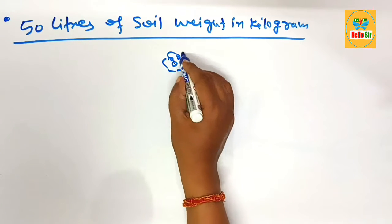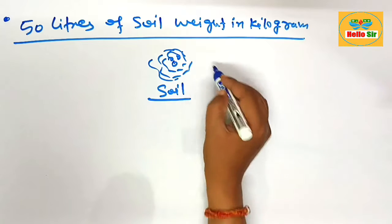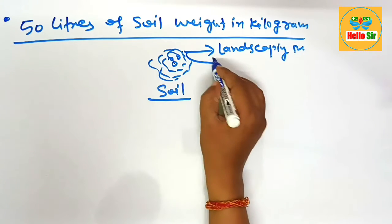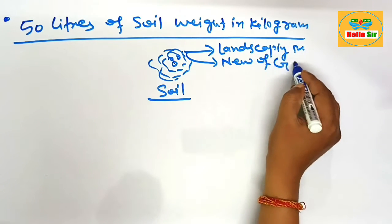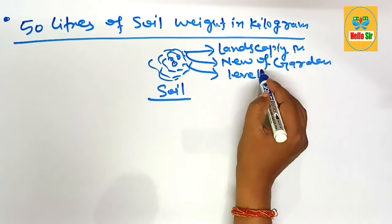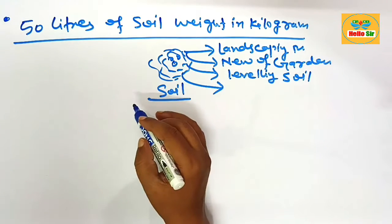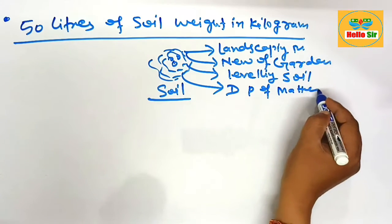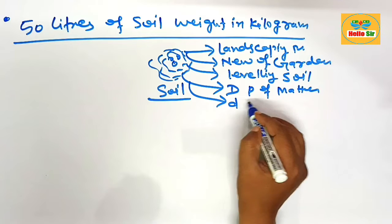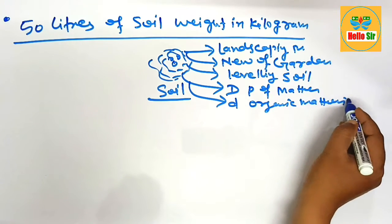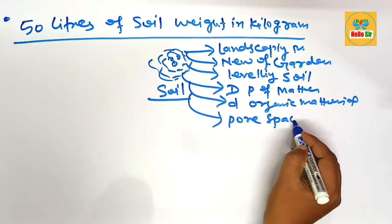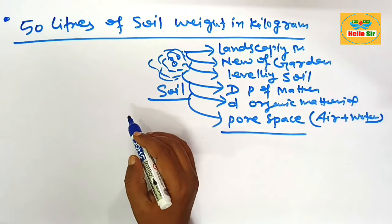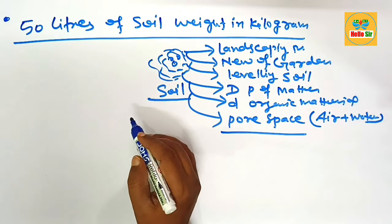Suppose there is a heap of soil. As you know, soil is a landscaping material used for creating new beds for your garden. It is also used for layering of soil. Soil consists of dense particles of matter and also contains decomposed organic material. It has few pore spaces between the particles that are filled with air and water.